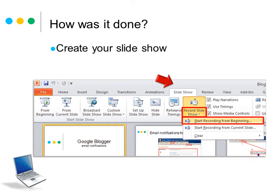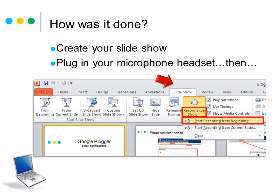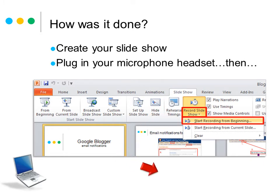Okay, so how do I do it? I basically created the slideshow like I normally would, then plugged in my microphone and headset and made sure that was working. I then went to the Slideshow tab, clicked on Record Slideshow — and just a point to remember: if you click the extra menu below by mistake, you want to go to Start Recording from Beginning.